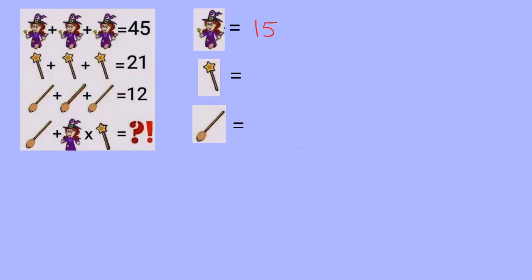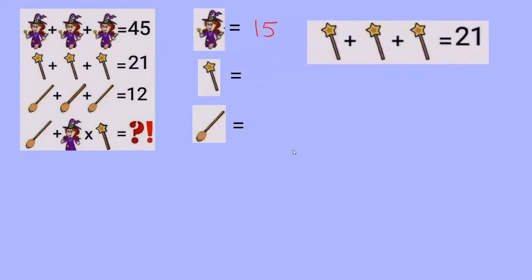All right, now the second equation is going to be able to get us what a wand is worth. And again, these are all three of the same, three identical wands. So three wands out of 21. If we divide by three, we get that one wand is going to be seven.